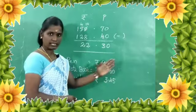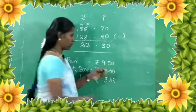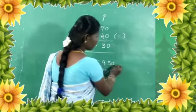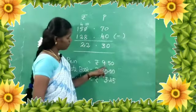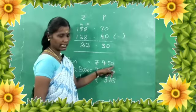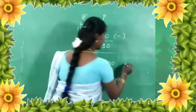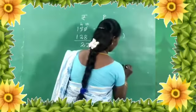This is the first round off. 9.50 — we will round off. If the digit is 5 or more, we round up to 10.